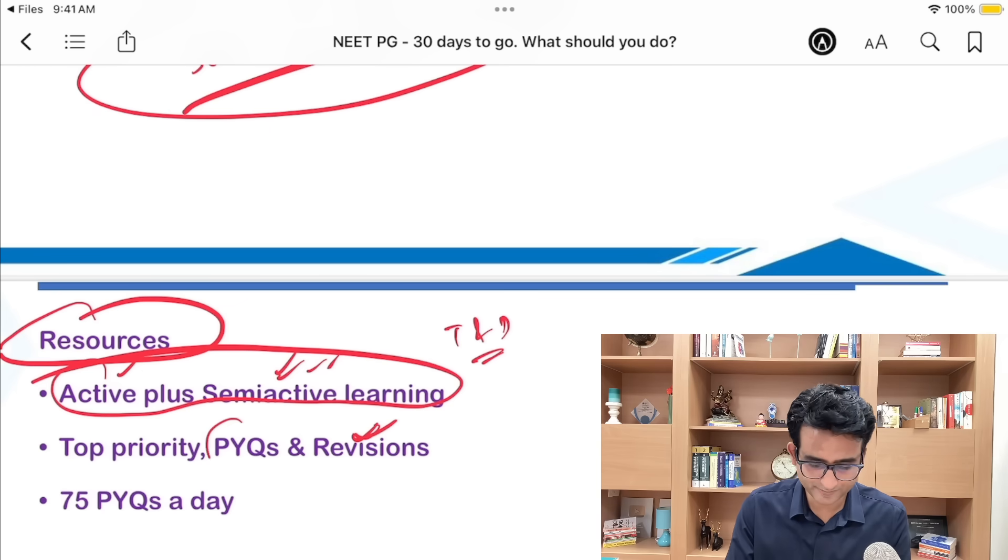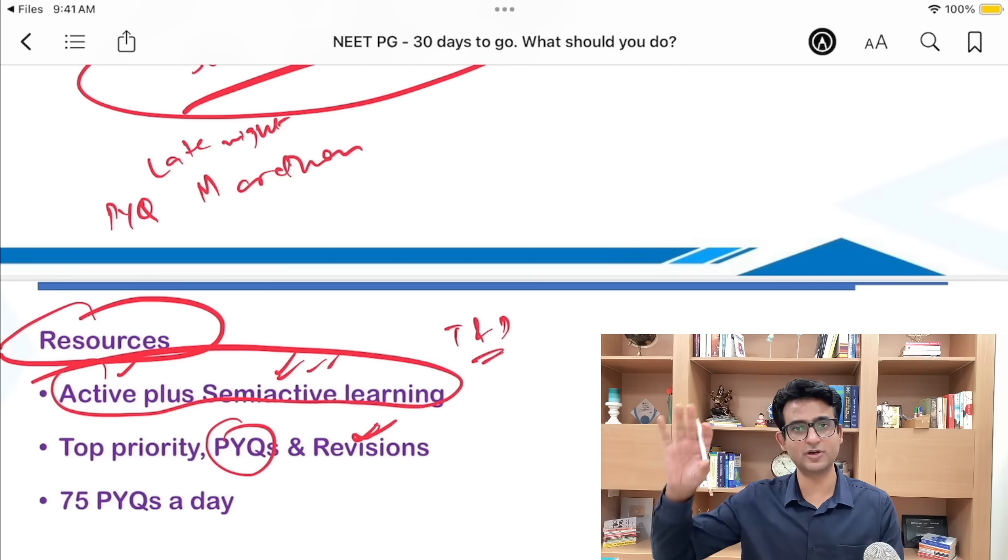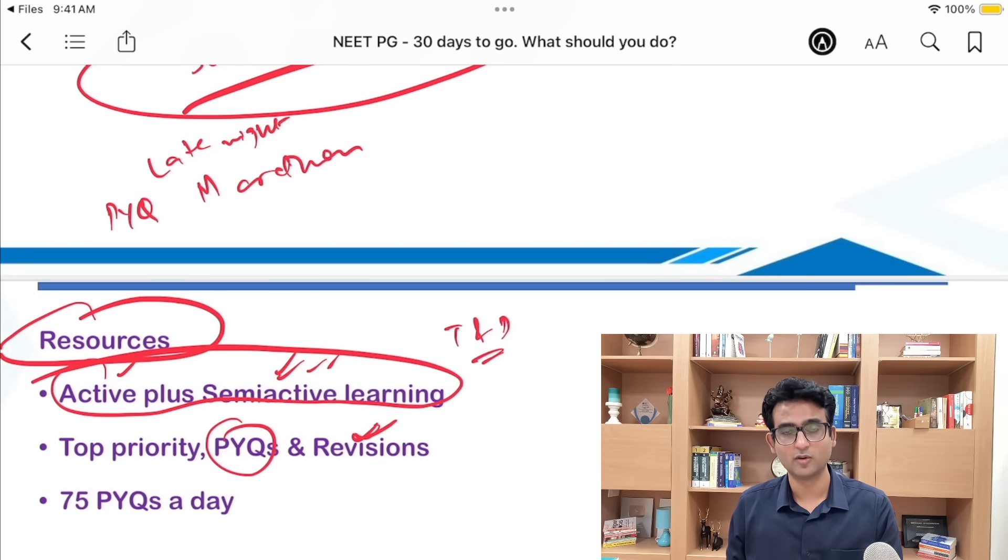You have to do PYQs. At least 5 years of PYQs, if possible 8-9 years of PYQs. If you are a Cerebellum student, we have started this thing: Late night marathon, late night PYQ marathon. In which what we are doing is we are giving 40 questions every night at 10:30 PM, and all of them are from NEET PG from 2015 till 2024. Why we are giving you questions from 2015, 2016, 2017? Because many of these so-called new questions that come in the exam, they have been asked sometime back in the past.